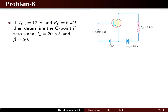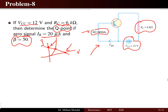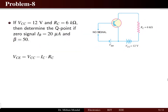The next problem: a transistor where the collector voltage is 12 volts and the collector resistance is 6 kilohms. We have to determine the Q point (quiescent point) when the zero-signal base current is 20 microamps and beta is 50. Zero signal is used because we need to determine the load line. The two points on the load line — the cutoff point and the saturation point — are obtained from the no-signal condition. The Q point is the intersection of the load line and the transistor current curve.